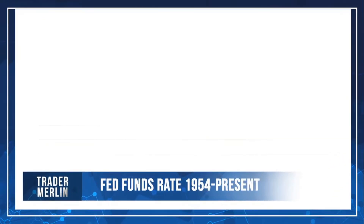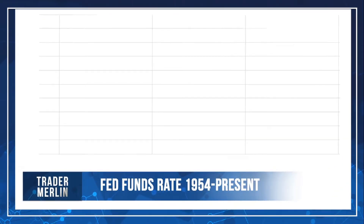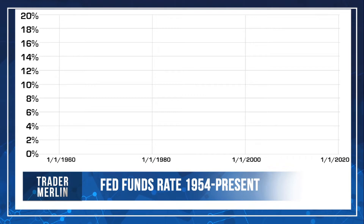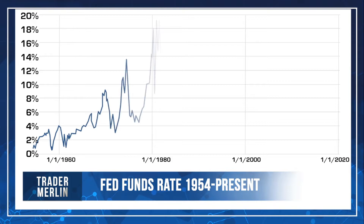Let's build a chart out to give you an idea of what we're really looking at. What we're looking at here is the fed funds rate going back to 1954 through just a couple of days ago. You can see the scale on the left-hand side goes from zero percent all the way up to 20. As we slowly bring in that fed funds rate, you'll notice that back in the 60s it's around two to four percent.